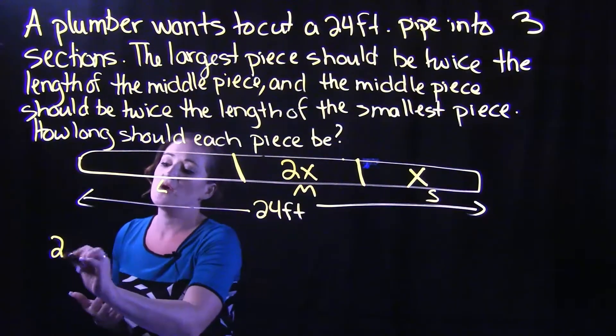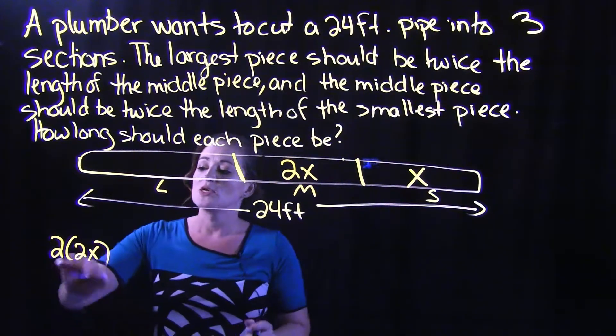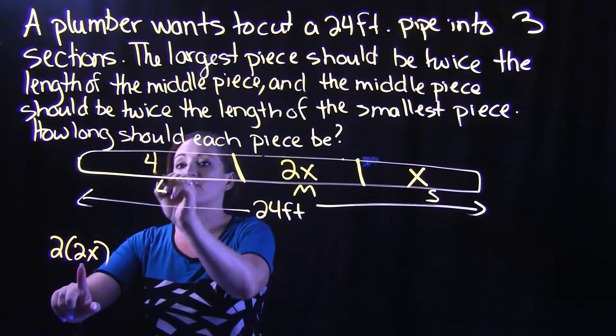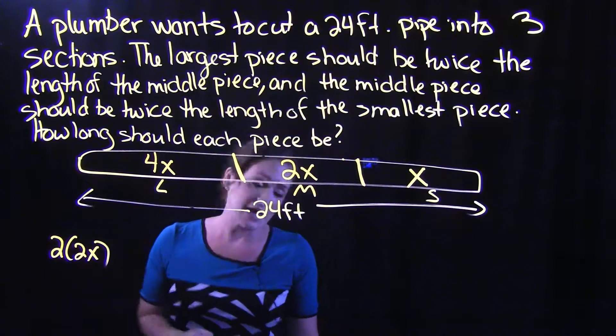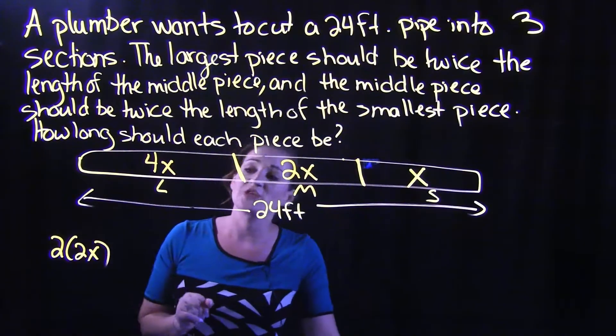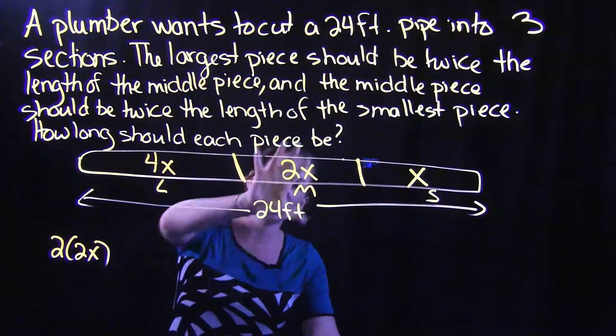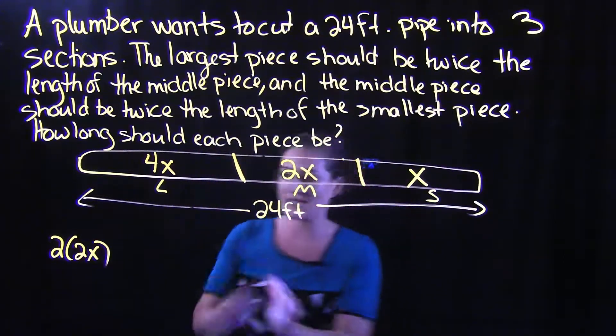I'm going to say 2X times 2. So 2 times 2 is going to give us 4X there. So if I double that 2X, I get 4X. So the large piece is 4X, middle piece is 2X, small piece is X.